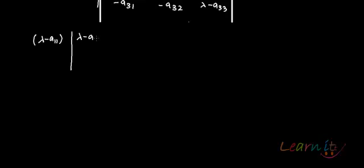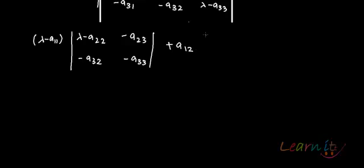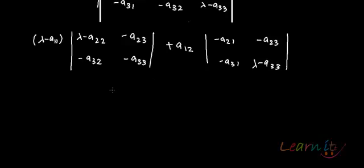The first term is (λ minus A11) times the determinant of [λ minus A22, minus A23; minus A32, λ minus A33]. Then minus of minus A12 makes it plus A12 times the determinant of [minus A21, minus A23; minus A31, λ minus A33]. Then minus A13 times the determinant of [minus A21, λ minus A22; minus A31, minus A32].